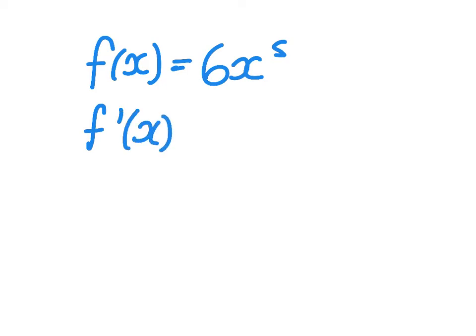This also works when there are coefficients. So if the function is 6x to the power of 5, our derivative will be, well we multiply by the power, 5 times 6 is 30,